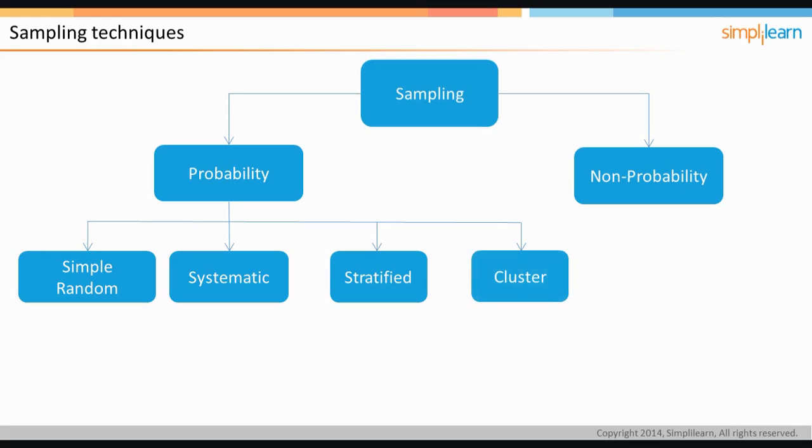Finally, we have cluster sampling. This technique is used when natural, but relatively homogeneous groupings are evident in a statistical population.